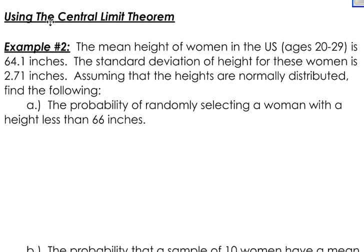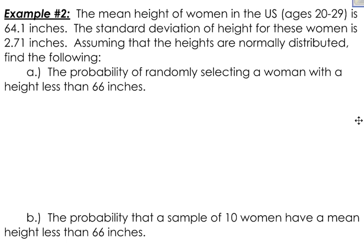In this video, I want to continue to use the central limit theorem, but I want to focus on the differences between the wording of two very similar questions. Example 2 says: the mean height of a woman in the United States is 64.1 inches. The standard deviation of the height for these women is 2.71 inches. Assuming that the heights are normally distributed, find the probability of randomly selecting a woman with a height less than 66 inches.